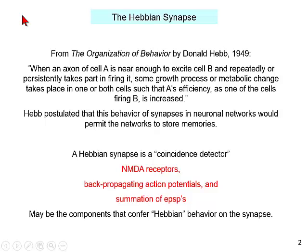Hebb had an idea that perhaps synapses were involved in memory and learning. His formalism, now called the Hebbian synapse, built on what we knew about axons and synapses. Hebb basically said: if axon A fires, is near enough to excite cell B, and this takes place repeatedly, then there is a growth process or a metabolic change that occurs, so that A's efficiency is increased in order to fire B. This joint firing of synapses could be the basis for learning.